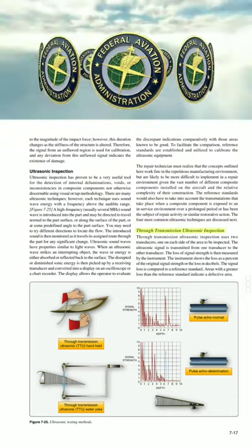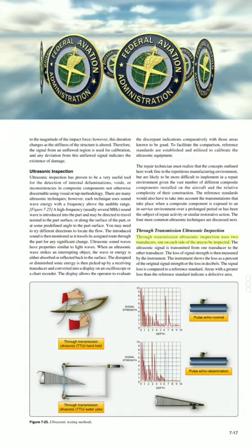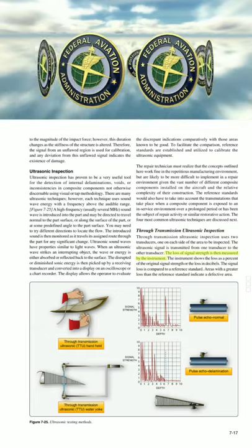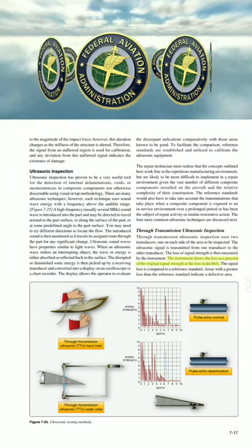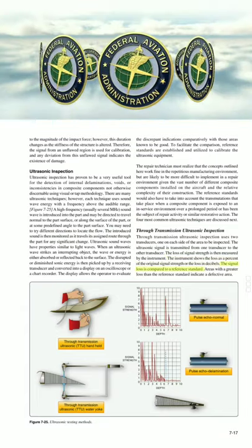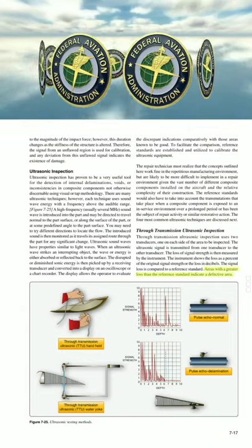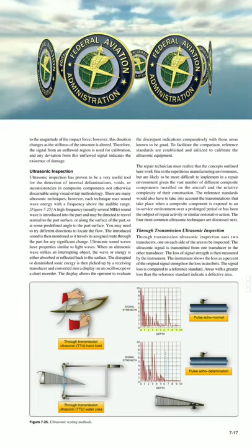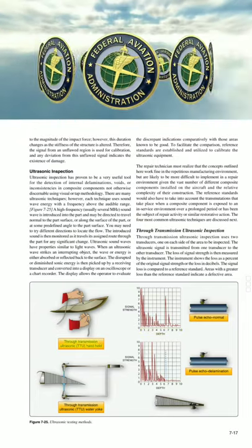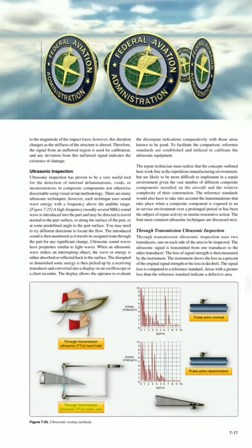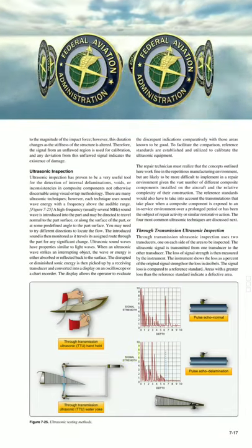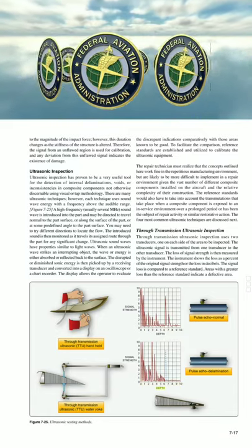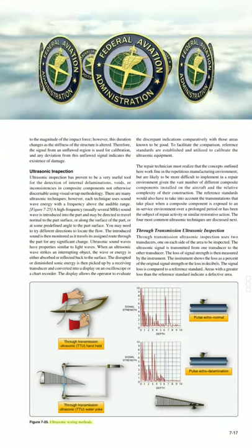Through Transmission Ultrasonic (TTU) inspection uses two transducers, one on each side of the area to be inspected. The ultrasonic signal is transmitted from one transducer to the other. The loss of signal strength is measured by the instrument, which shows the losses as a percent of original signal strength or in decibels. The signal loss is compared to a reference standard; areas with a greater loss than the reference standard indicate a defective area.